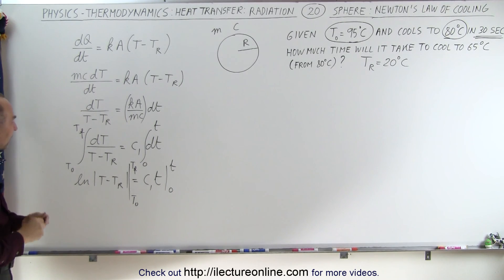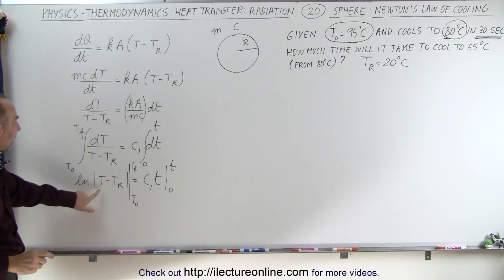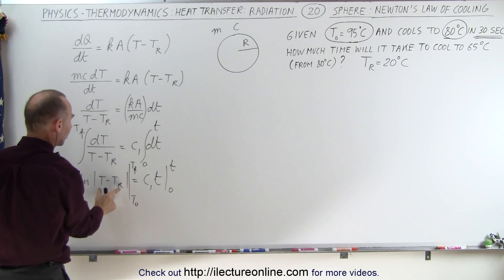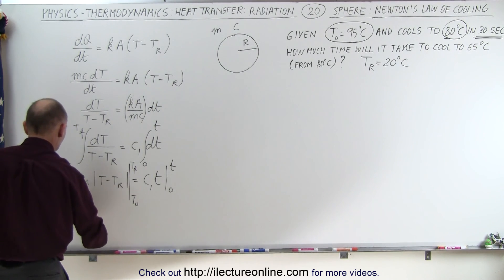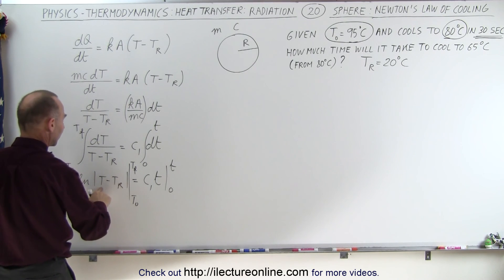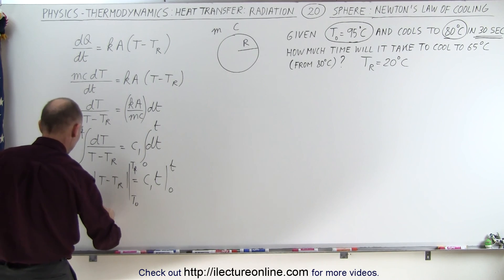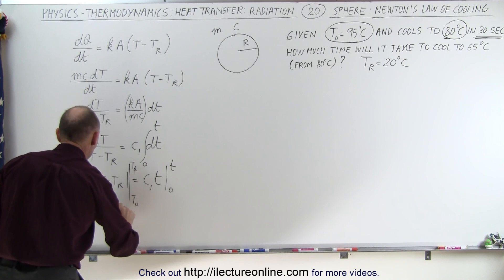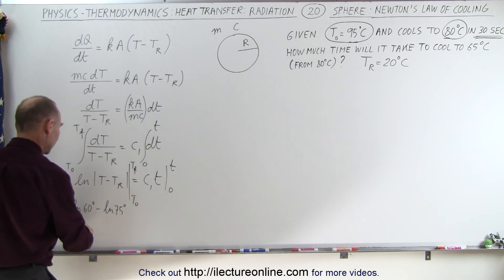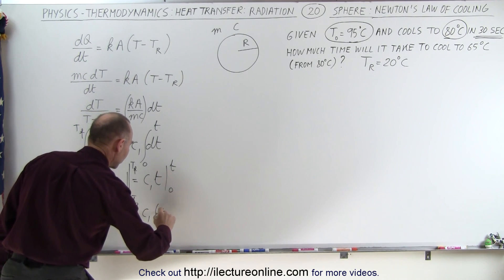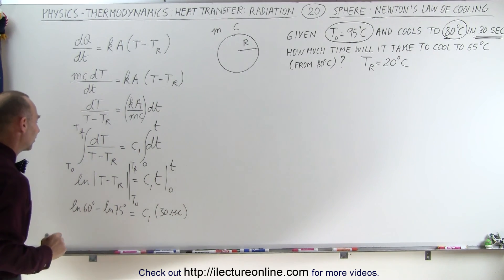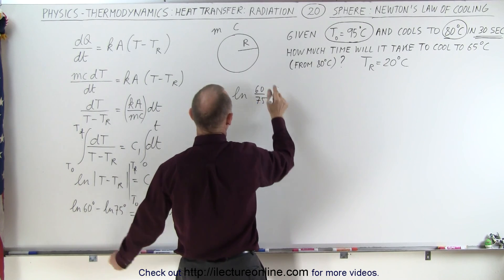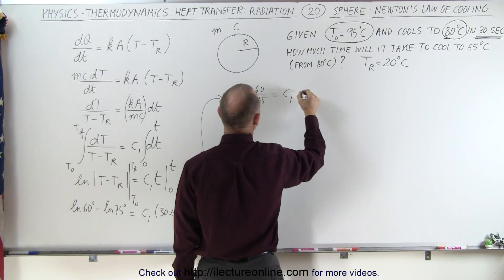Plugging in the values: at the upper limit we get the final temperature of 80 degrees centigrade minus the room temperature of 20 degrees centigrade — I keep saying time, I should say temperature — so the difference is 60 degrees, giving us the natural log of 60. Subtracting the lower limit: 95 minus 20 gives the natural log of 75. So we have the natural log of 60 minus the natural log of 75, which equals the natural log of 60 divided by 75 — a negative quantity — equal to C1 times 30 seconds.